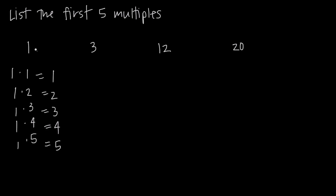When I say 1 divided by 1, I get 1, which is a whole number answer. When I say 2 divided by 1, I get 2, which is a whole number answer. 3 divided by 1 gives me 3, 4 divided by 1 gives me 4, 5 divided by 1 gives me 5 — I get whole number answers.